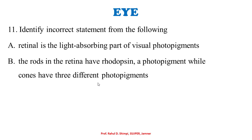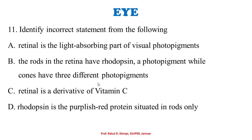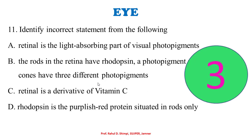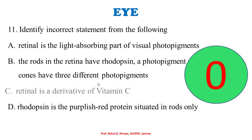Identify the incorrect statement from the following: A: retinal is the light-absorbing part of visual photopigments. B: rods in the retina have rhodopsin, a photopigment, while cones have three different photopigments. C: retinal is a derivative of vitamin C. D: rhodopsin is a purplish red protein situated in rods only. The correct option is C — retinal is a derivative of vitamin A, not vitamin C.